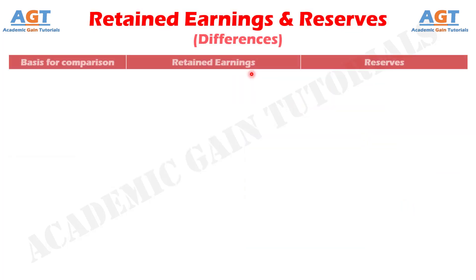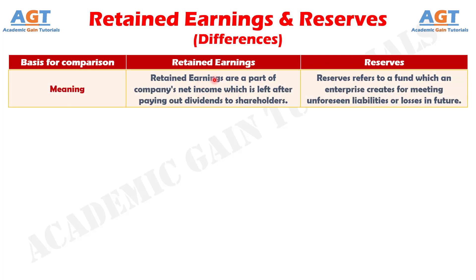Let's look into the basic differences between retained earnings and reserves in a tabular form. Difference No. 1: Reserves are that part of the earnings, receipts, or surplus of a business entity that the company's management sets apart for any reason. Conversely, retained earnings is that portion of the company's profit earned which the company keeps and accumulates in the business for utilization in future.